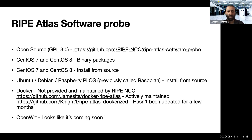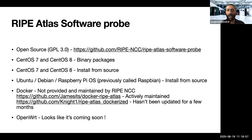OpenWrt, which is an open source firmware for routers — it looks like there is support for this coming to the OpenWrt platform. The folks from CZ.NIC, who are also behind the Omnia router which is the open source router based on OpenWrt, have submitted a pull request about eight or ten days ago which I've been following. It looks like support for OpenWrt for installing the software probe is going to come soon.